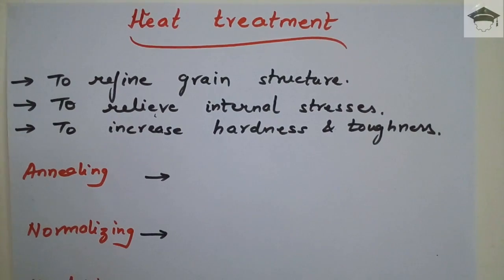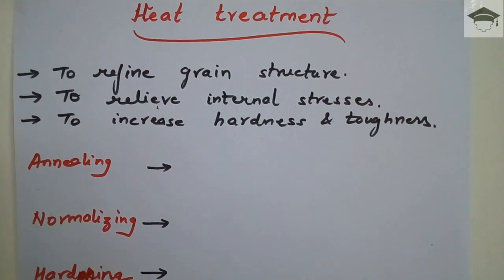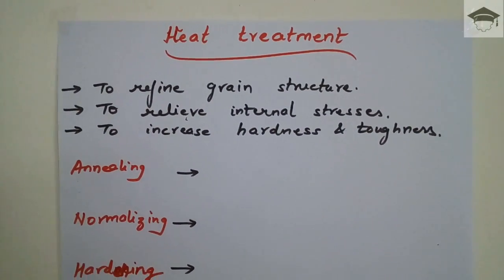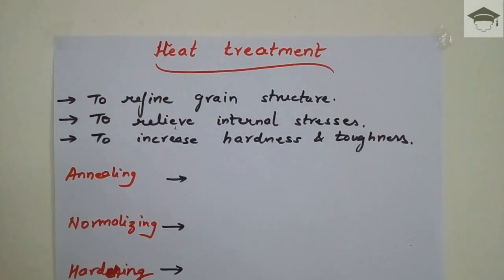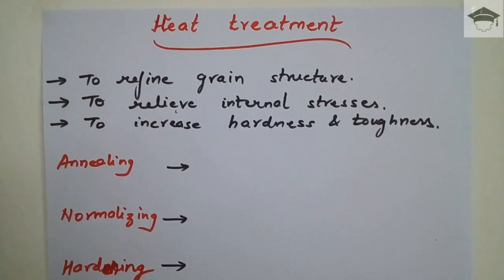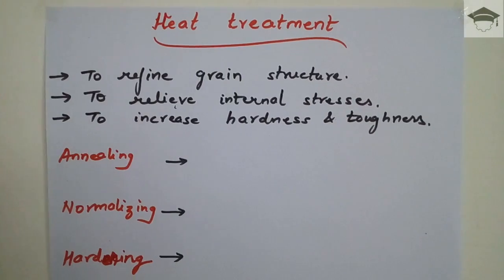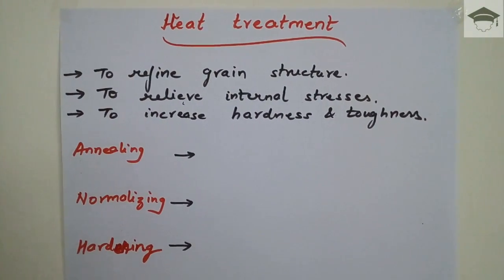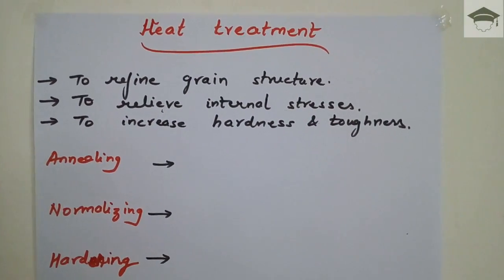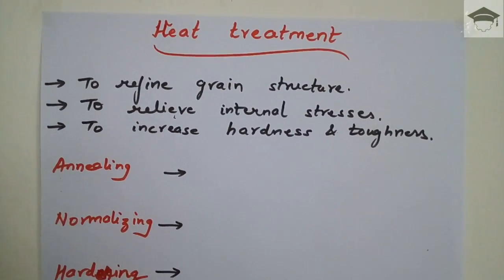After heat treatment, the main objectives are to refine the grain structure, relieve internal stresses, and increase hardness and toughness as required. Heat treatment is applied to components that have already been rolled or forged.